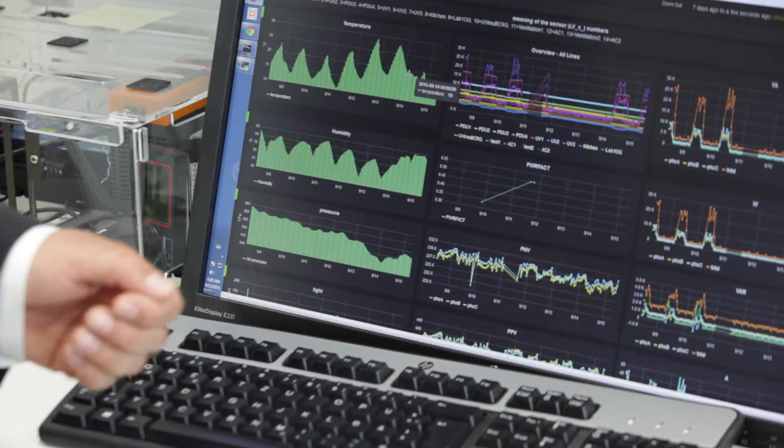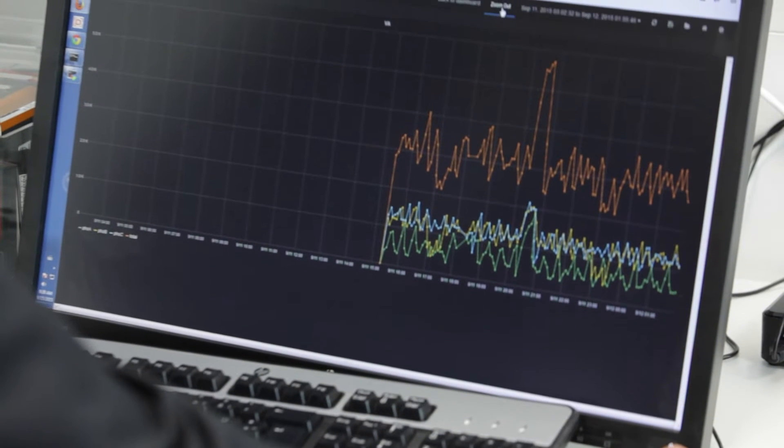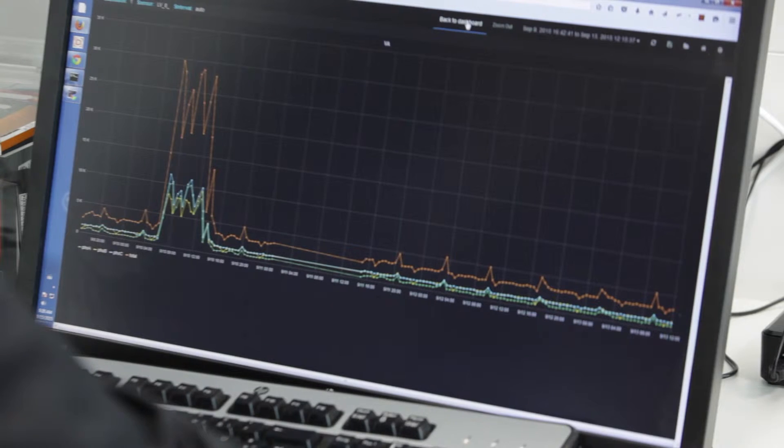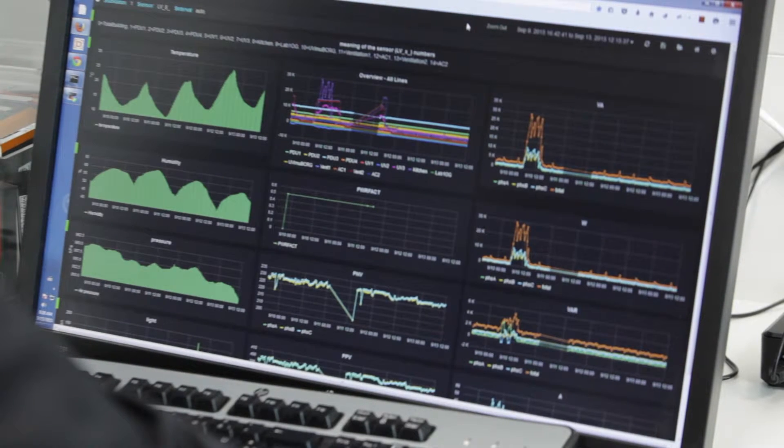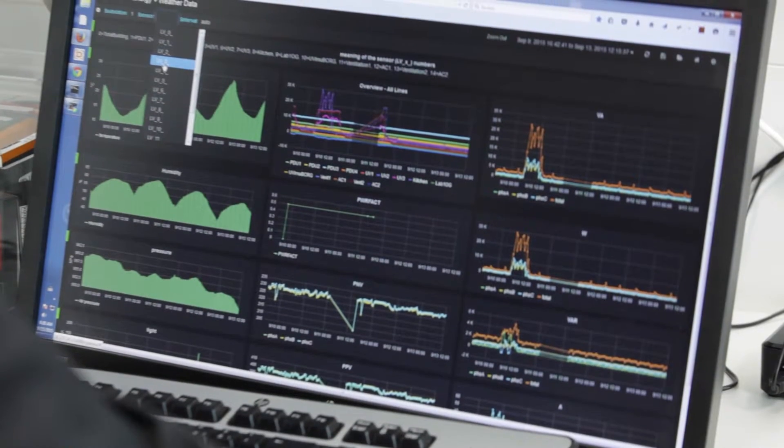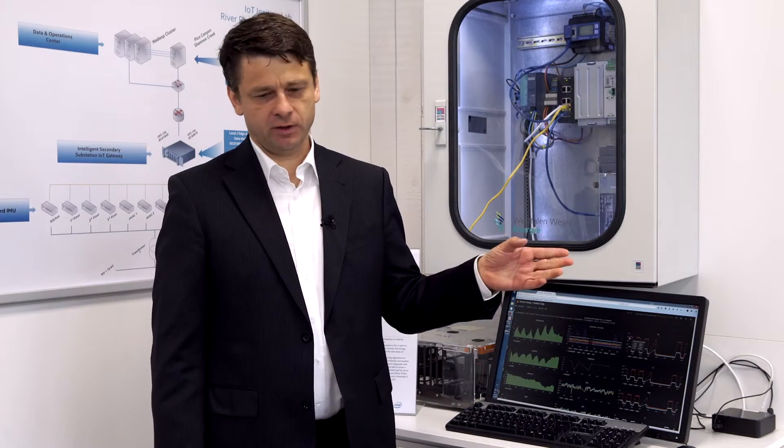This is live data which we actually collect in our own Intel building. We can identify of course very typical behavior of the air conditioning. We can see that for instance the kitchen uses very much energy at a specific time and we can see the switch between summer and winter and the air conditioning.